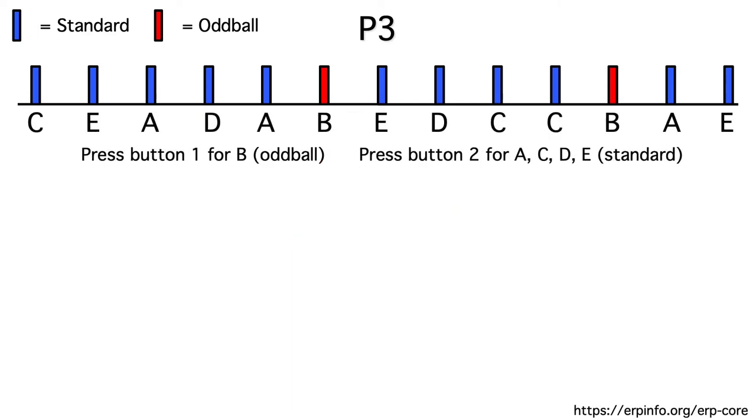For example, imagine that we present the letters A, B, C, D, and E with equal probability in random order on a video monitor, and imagine that we ask subjects to press one button for the letter B and another button for any other letter.